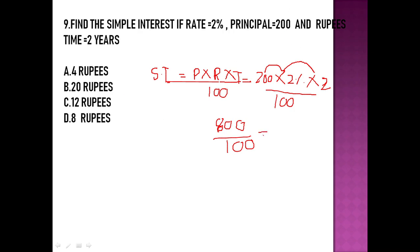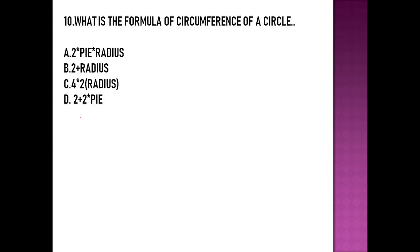So 200 × 2 × 2 = 800, and 800 divided by 100 equals 8 rupees. Since simple interest is calculated in rupees, the answer is 8 rupees, and option D is correct.